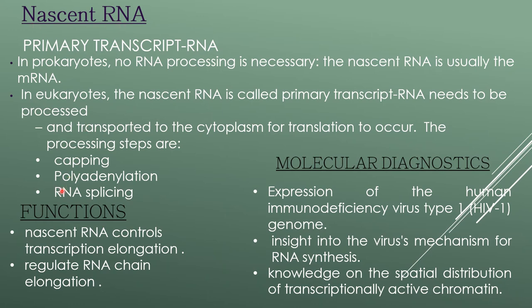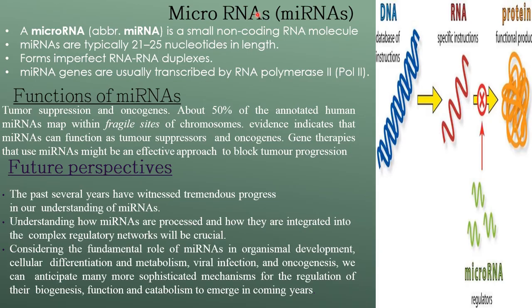What are the functions of nascent RNA? Nascent RNA controls transcription elongation and regulates RNA chain elongation. Functional diagnostics of nascent RNA include expression of the HIV type 1 genome — providing insight into the virus mechanism for RNA synthesis — and knowledge on the spatial distribution of transcriptionally active chromatin.